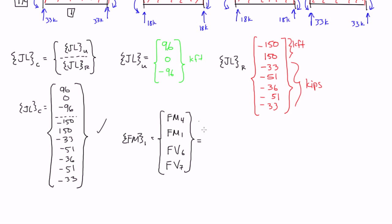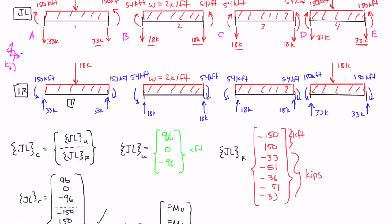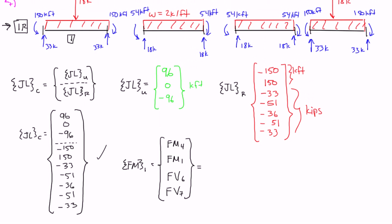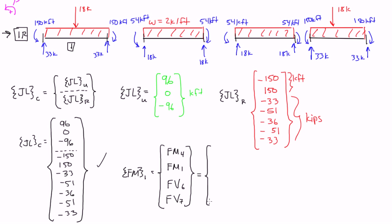To figure out the values, we look at our internal reaction diagram. Degree of freedom 4 is on the left side of element 1 and is a positive 150. Degree of freedom 1 is on the right side and is a negative 150 — it's going clockwise. For the fixed shears, degree of freedom 6 on the left side is positive 33, and on the right side, degree of freedom 7, you have another positive 33.